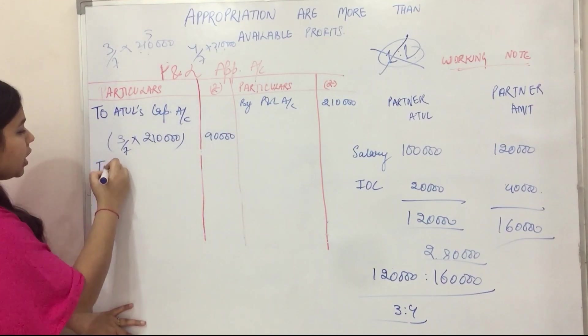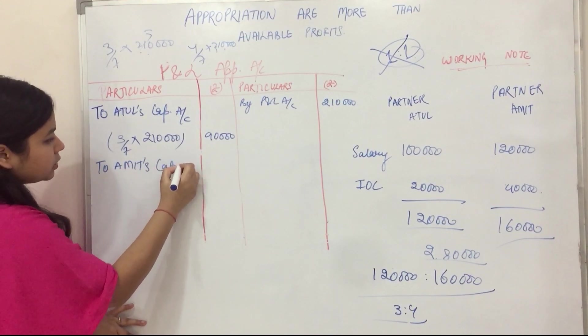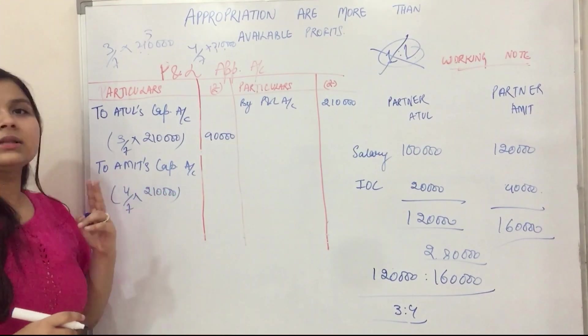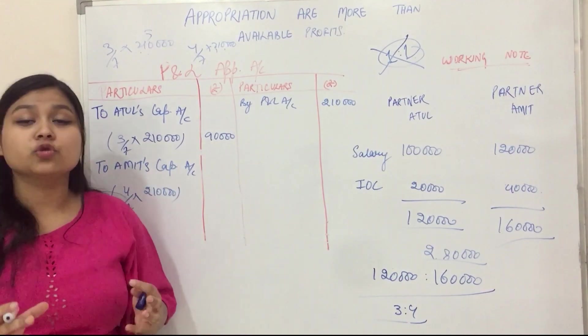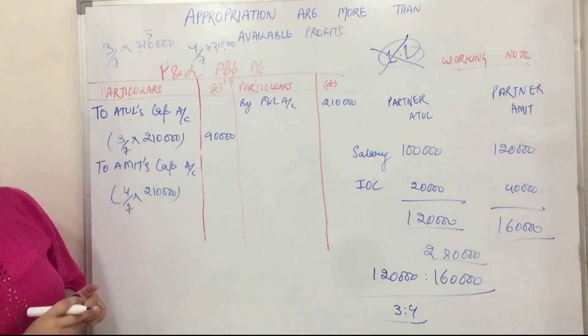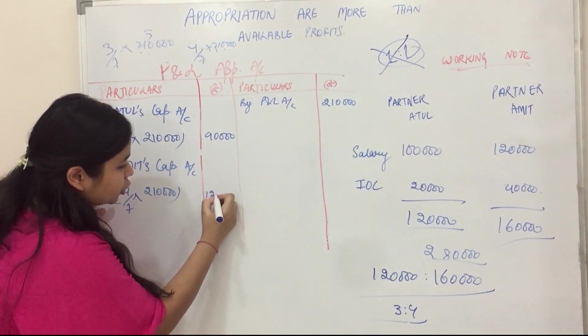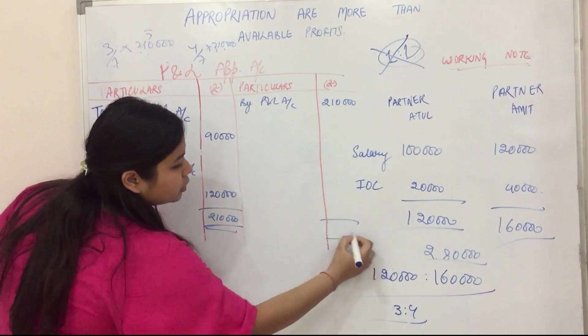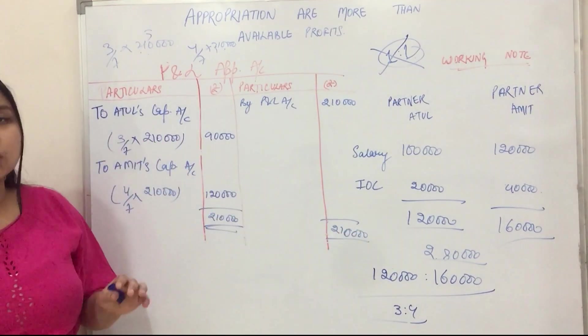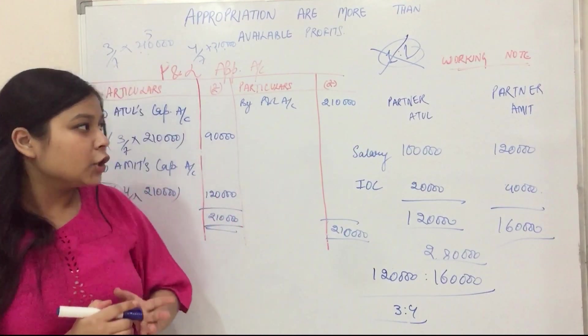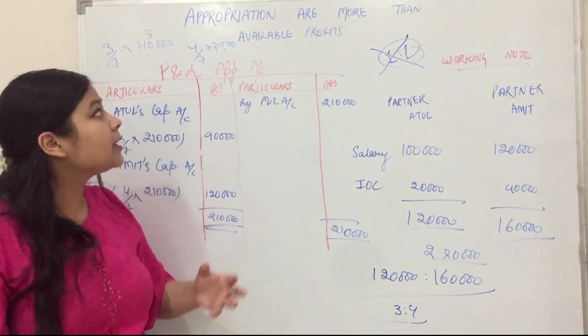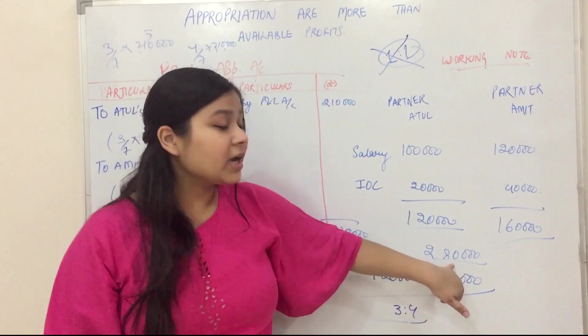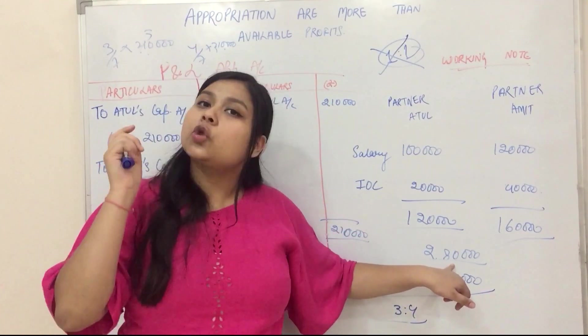And to Amit capital account, 4 by 7 of 2,10,000. Our profit, 4 by 7 parts will go to Amit, so it will be 1,20,000. So if we total it, we get 2,10,000.